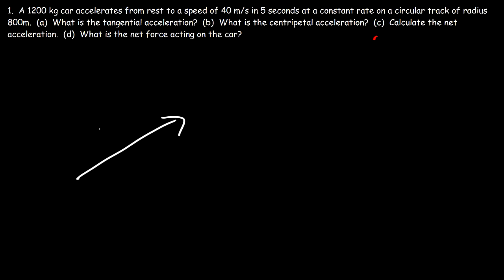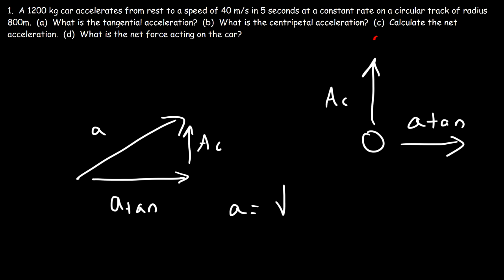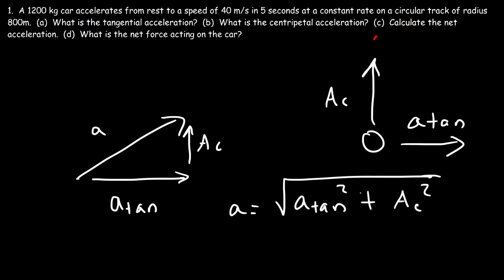Because we have two components of acceleration, there is a resultant acceleration. The resulting acceleration is based on the tangential acceleration and the centripetal acceleration. To calculate it, it's equal to the square root of the square of the tangential acceleration plus the square of the centripetal acceleration.